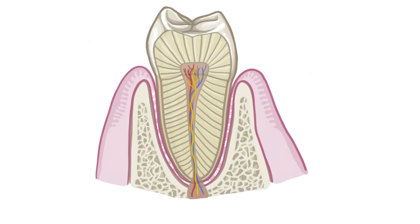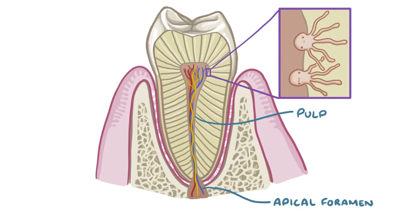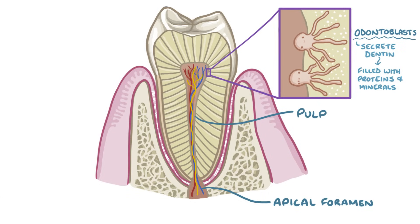Now let's fill the tooth in from the inside out. Blood vessels and nerves come from the jawbones and enter the center of the root through a narrow passage called the apical foramen. From there, they enter the soft center of the tooth called the pulp, where they provide nutrition and sensation. The outer wall of the pulp has odontoblasts, which are cells that secrete a bone-like substance called dentin, which is filled with proteins and minerals. The odontoblasts have long processes, or arms, that lay within tiny tubules in the dentin, kind of like an octopus sticking its arms through a block of cement. These tubules are important for sensory nerves as well, which use them to travel through the dentin from the pulp to the dentin-enamel junction.